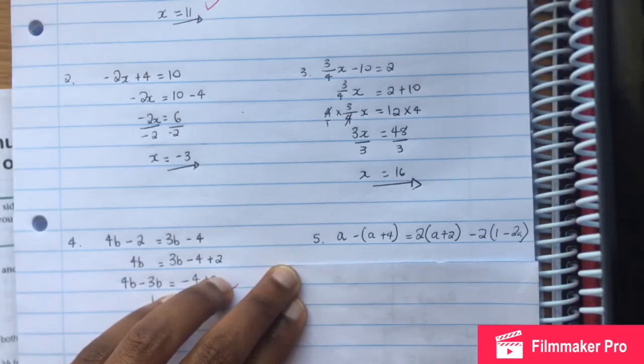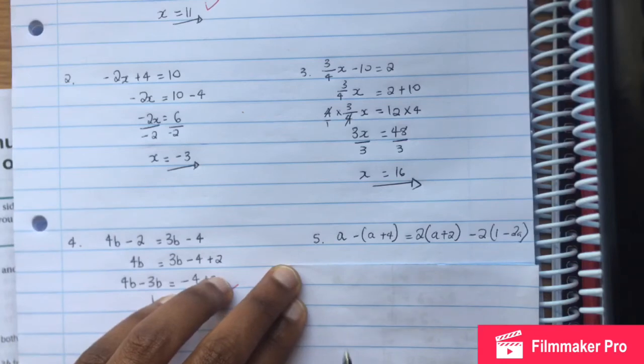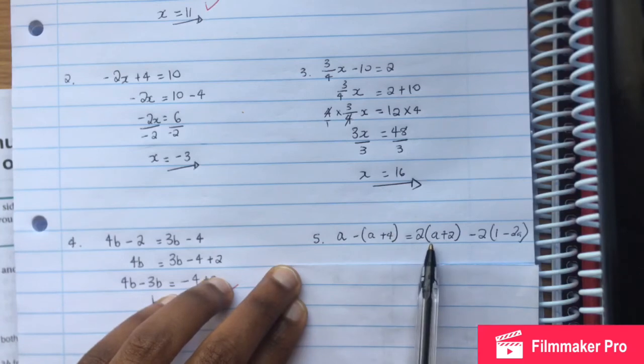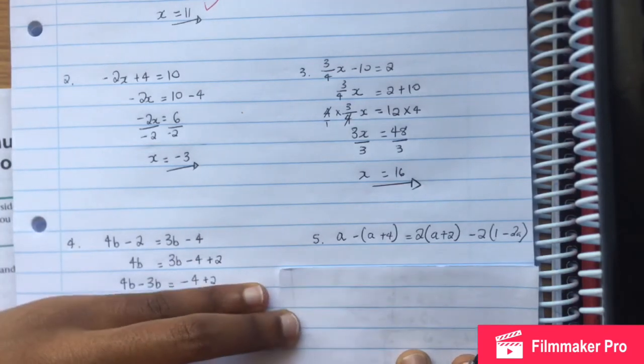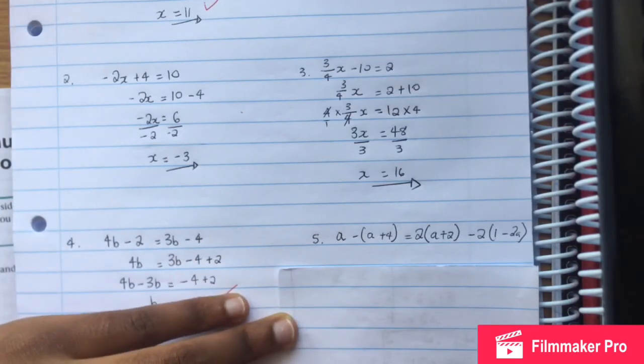The last one we solve is negative bracket a plus 4 close bracket is equal to 2 bracket a plus 2 close bracket minus 2 bracket 1 minus 2a close bracket. Now, what we do at all times when we solve is to start with what is in brackets.